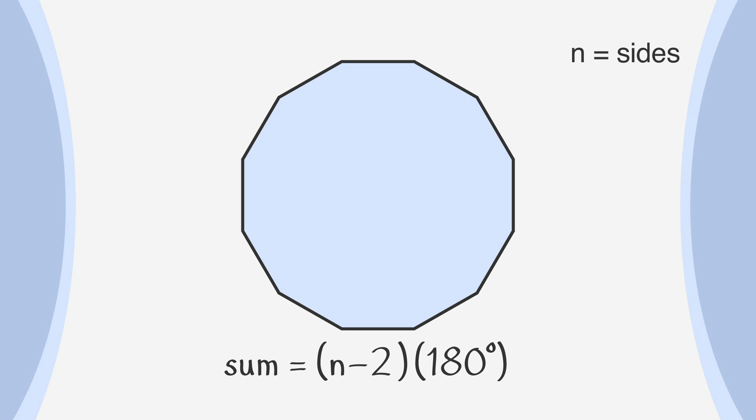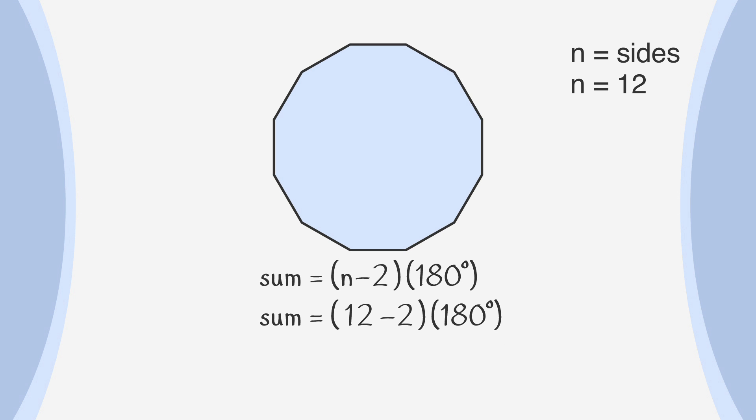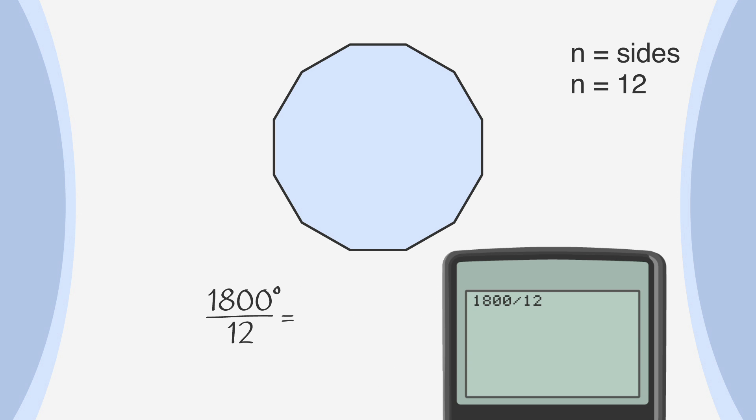If we're given a regular polygon with 12 sides, we would plug this into our formula. Sum equals 12 minus 2 times 180 degrees. After subtracting, we get 10 times 180 degrees, or sum equals 1,800 degrees as the total of all the angle measurements combined. To find the measure of one angle, we need to divide our sum by the number of angles that our polygon has, which is 1,800 degrees divided by 12. We find that the measure of each angle is 150 degrees.